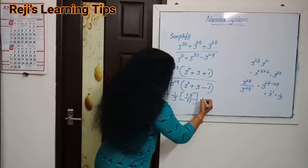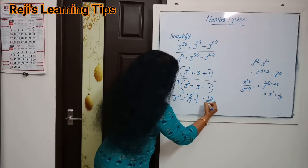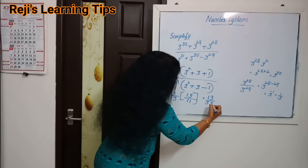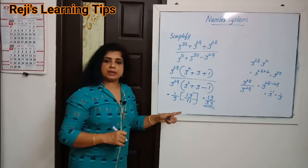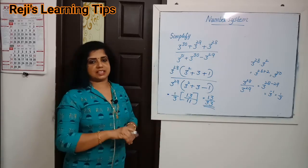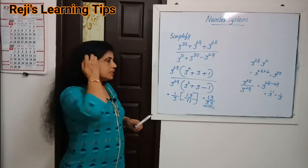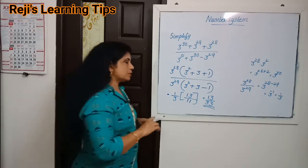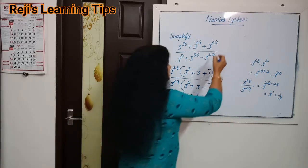Then we get 13 divided by 33. So the answer is 13 divided by 33.